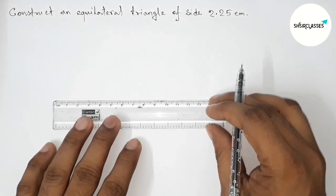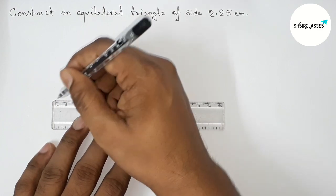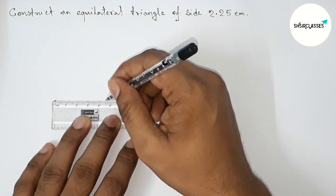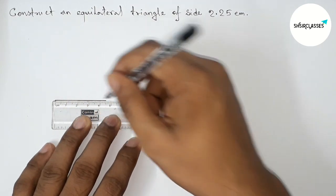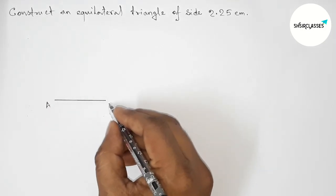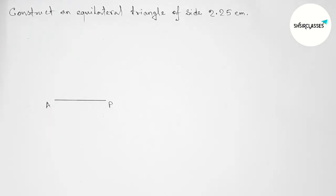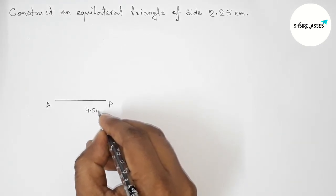First of all, let us draw here a line segment of length 4.5 centimeter. So pointing out here 4.5 centimeter and drawing here a line segment of length 4.5. Now taking here A and here P. So AP, that is 4.5 centimeter line segment.